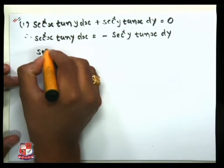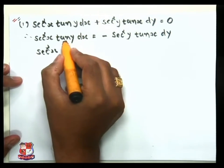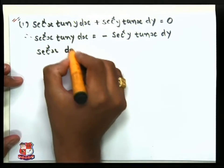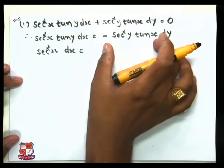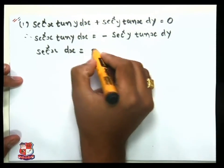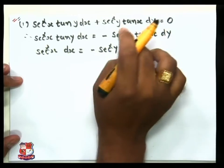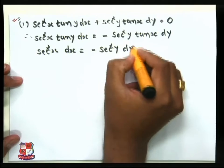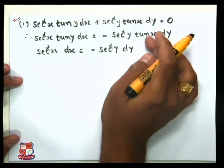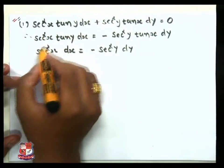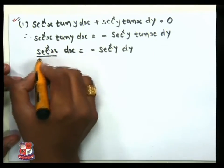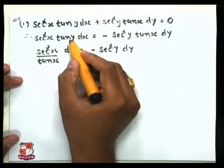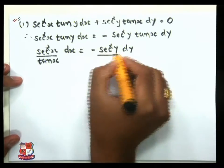So sec²x is kept as is on the x side; we don't place tan(y) there — only x-side terms with dx. This equals the y-side terms: −sec²y with only dy. The remaining terms tan(x) and tan(y) are cross-multiplied to separate the variables.